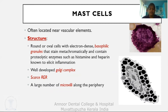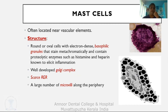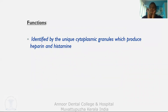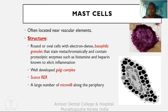Mast cells are often located near vascular elements. Structure: round to oval cell with electron-dense basophilic granules that stain metachromatically and contain proteolytic enzymes such as histamine and heparin, well-developed Golgi complex, scarce rough endoplasmic reticulum, and numerous microvilli along the periphery. Function: the unique cytoplasmic granules produce heparin and histamine; they are known to elicit inflammation, reacting mostly in hypersensitivity responses.